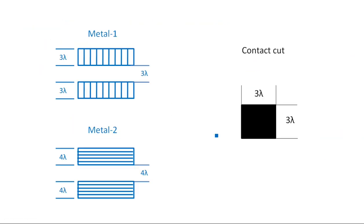Coming to Metal 1 and Metal 2 — there are two different metals commonly used in layout diagrams. Metal 1 has a minimum thickness of 3 lambda and the spacing between two Metal 1 lines should also be 3 lambda. For Metal 2, all dimensions increase: the minimum thickness is 4 lambda and the spacing between two Metal 2 lines is also 4 lambda.